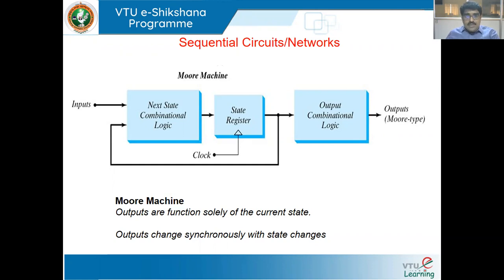If I want to see the block diagram of a Moore machine, it looks like this: we have inputs, then the next-state combinational logic, then a state register, then an output combinational logic. The state register output goes to the input of the output combinational logic and is also fed back to the next-state combinational logic. That gives us the next state, and finally we get the output from the Moore machine.